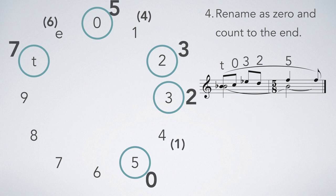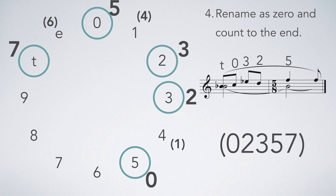Thus, the prime form of this set is 0, 2, 3, 5, 7, which we put in parentheses to indicate that this is prime form.